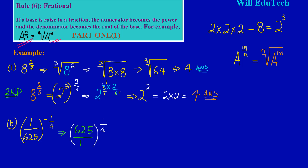So this implies I can now write this in surd form. I am taking the fourth root — my denominator is 4, so that becomes the root — of 625 as the base. My numerator is 1, which goes as the power, and anything raised to the power of 1 is itself. So I'm taking the fourth root of 625, and the fourth root of 625 is 5.